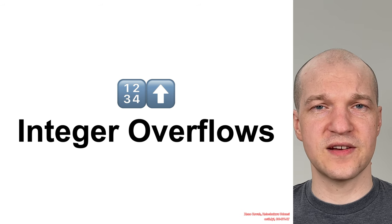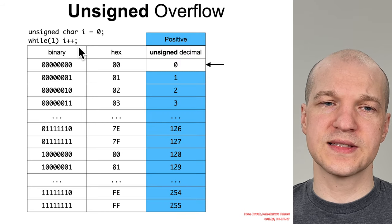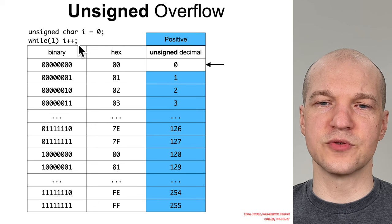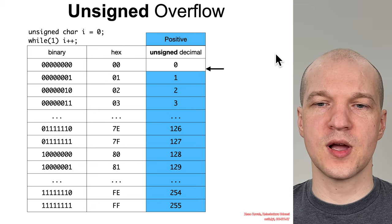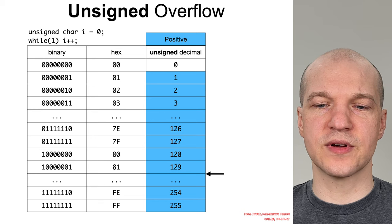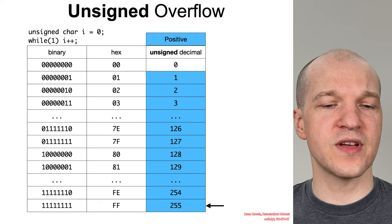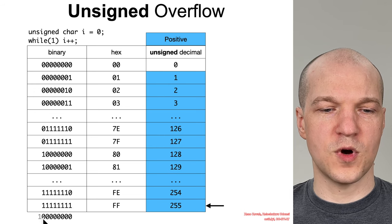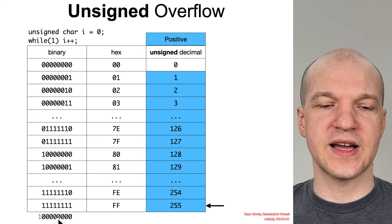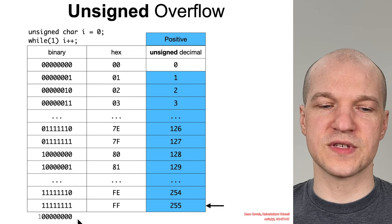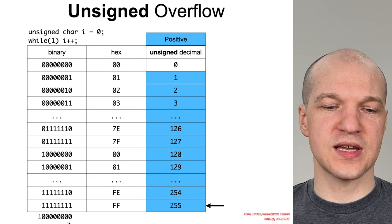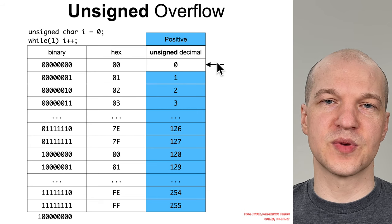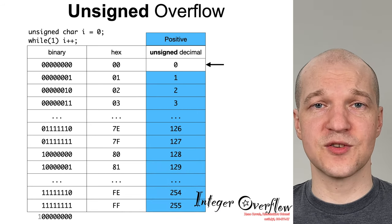So integer overflows, how exactly does this manifest, and why is it a security problem? Well, let's say we have some stupid trivial code like this, unsigned char i equals 0, and then an infinite loop doing i++. So i starts at 0, plus plus it's 1, plus plus it's 2, and it just keeps going until it eventually gets to 254, 255, and then if you do this math, all 1s plus 1, well the result is 1 and 8 0s, but you've only got 8 bits to use for storage of this value, so this most significant 1 just gets dropped, truncated, and then effectively it becomes all 0s, and it wraps back around from the maximum positive number down to 0. And boom, that was an integer overflow.